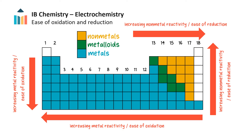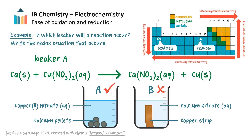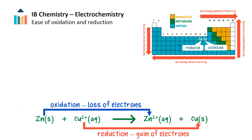Here is an example: in which beaker will a reaction occur? Write the redox equation that occurs. From the reactivity trends we know that metal reactivity or ease of oxidation tends to decrease from left to right across the periodic table. Since calcium is further to the left than copper, it is more reactive than copper. This means that calcium will preferentially be oxidized and therefore copper will be reduced. So a redox reaction would occur in beaker A, and this is the redox equation.